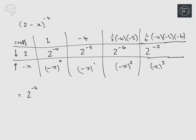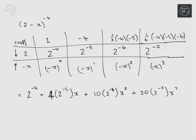So we get: 2^(−4). Then the minus signs: there are two minuses there, so it's plus. Four times 2^(−5) times x. Next, half of four is two, two times five is ten, so 10 times 2^(−6) x². Counting minus signs — six, which is even — so positive. The sixes cancel leaving 20 times 2^(−7) x³. Tidying up: 2^(−4) is 1/16; 4 times 2^(−5) is 4/32 = 1/8; 10 times 2^(−6) is 10/64 = 5/32; and 20 times 2^(−7) = 20/128 = 5/32 x³.